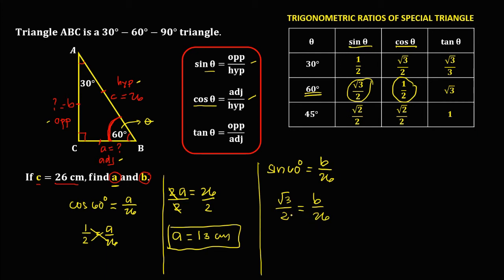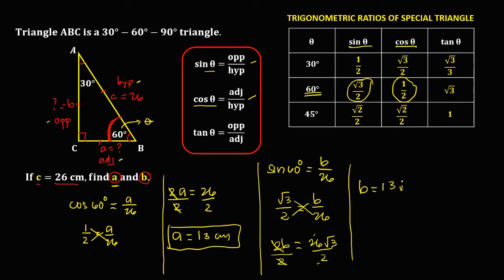Cross multiplication gives 2B equals square root of 3 times 26, that's 26 square root of 3. To solve for B, divide both sides by 2, so B is equal to 13 square root of 3 centimeters. So this is now for side B.